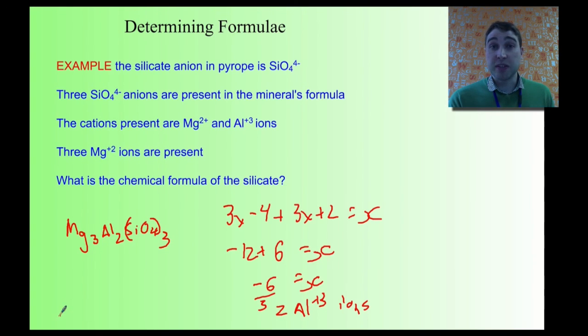Today we looked at how to find the formula of a silicate or aluminosilicate anion given specific information. That's it for Flipping Science today. See you.